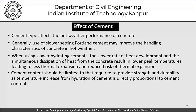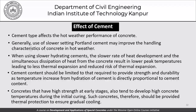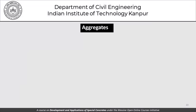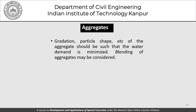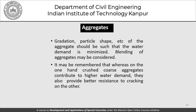Cement content should be limited to what is required for strength and durability, since temperature increase from hydration is directly proportional to cement content. Minimizing cement content minimizes heat of hydration and limits the temperature rise of concrete. Concrete with high early strength also tends to develop high temperatures during initial curing and should therefore be provided thermal protection to ensure gradual cooling.